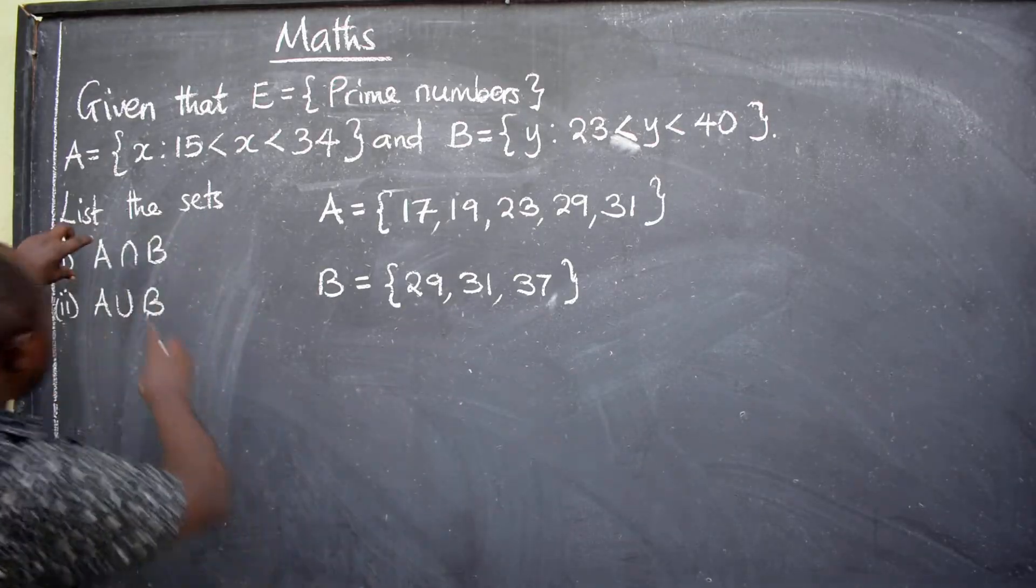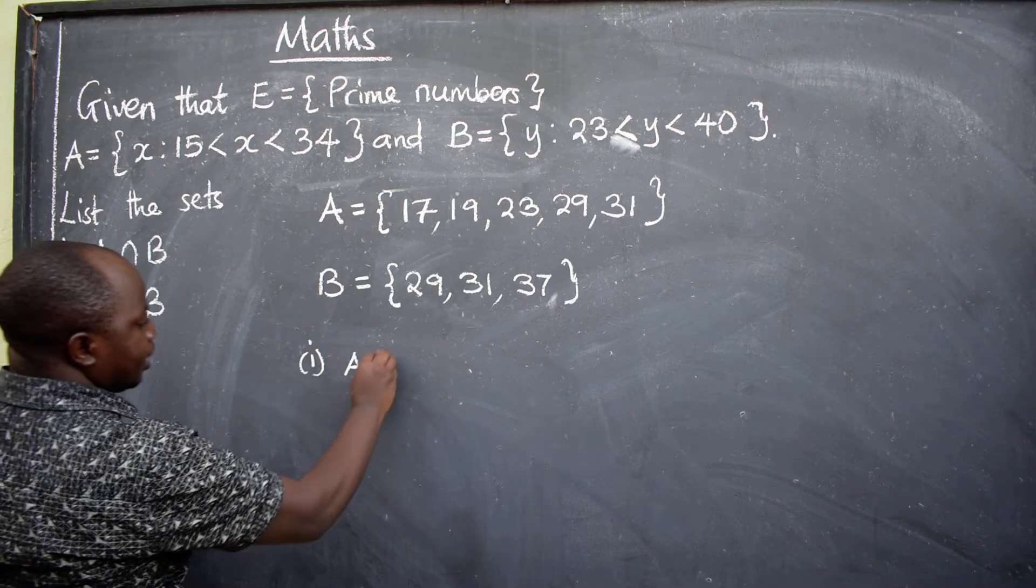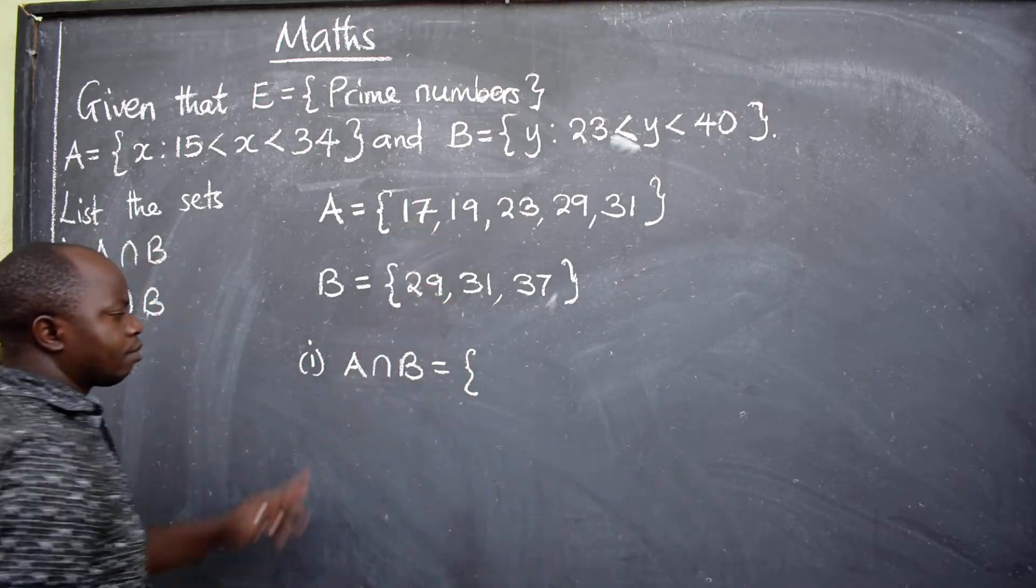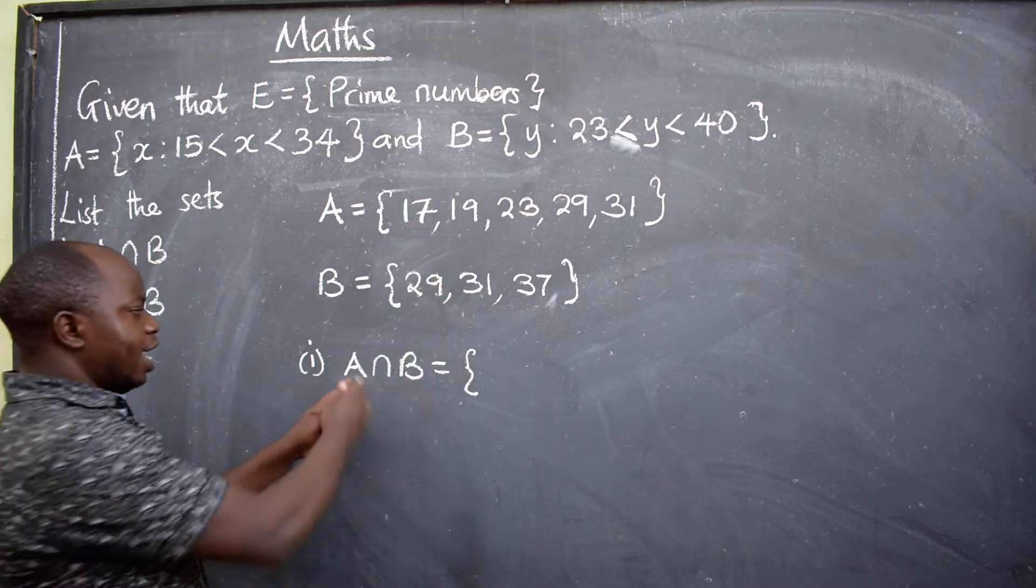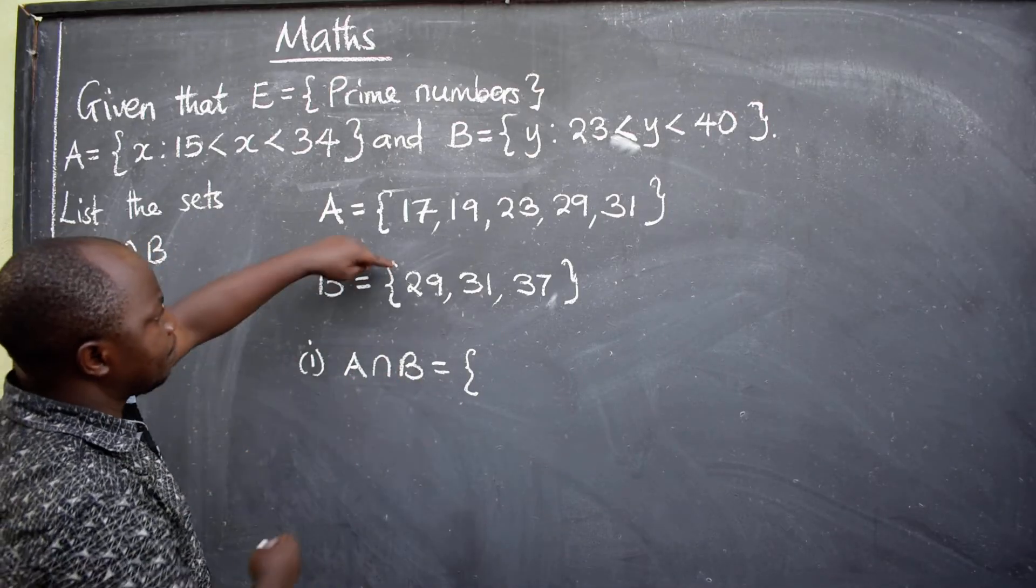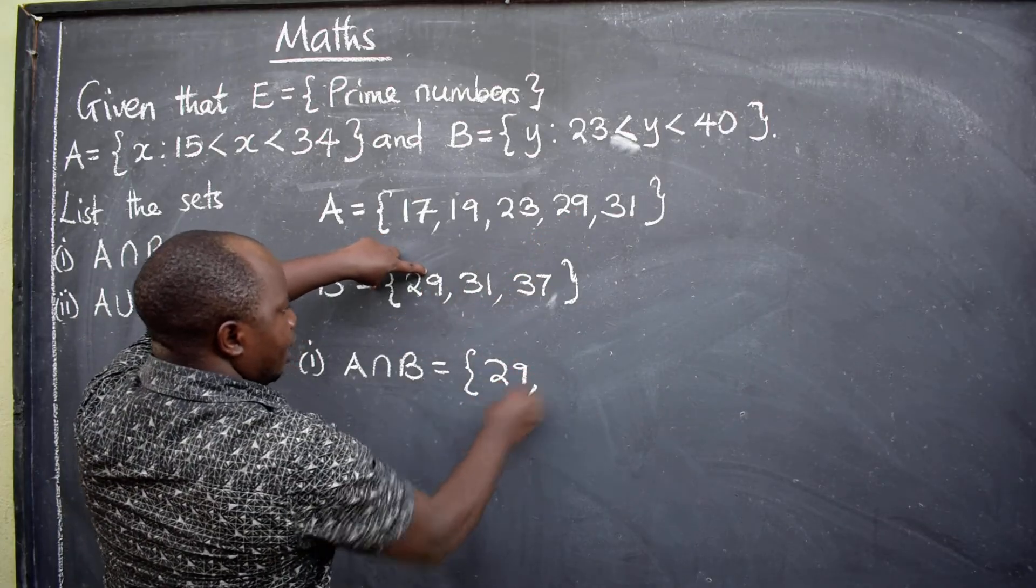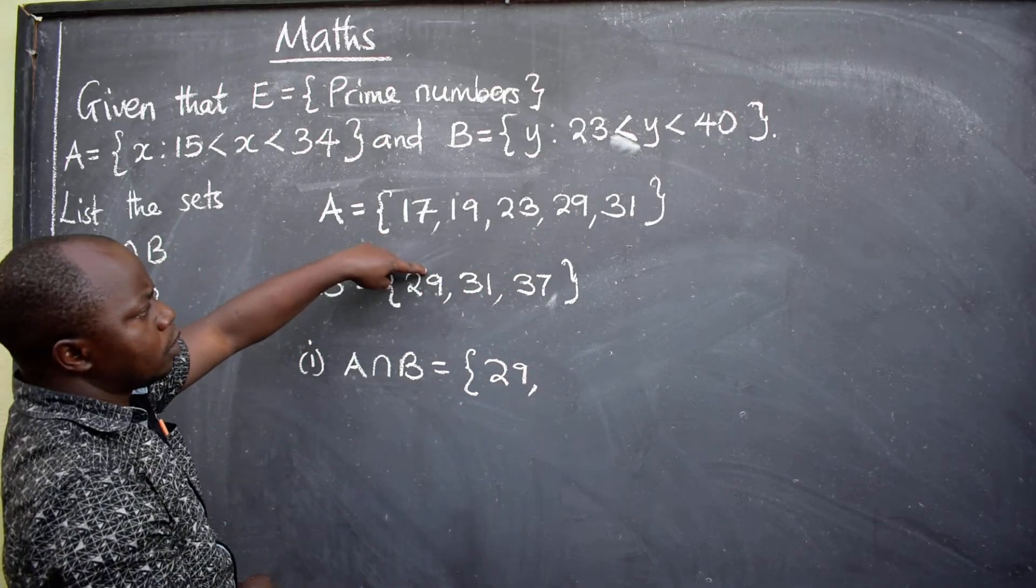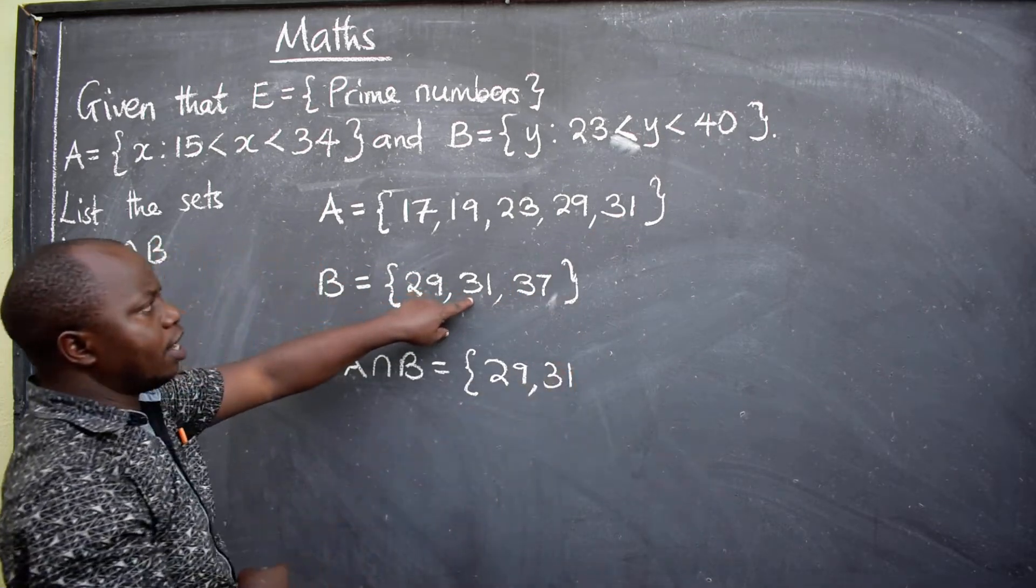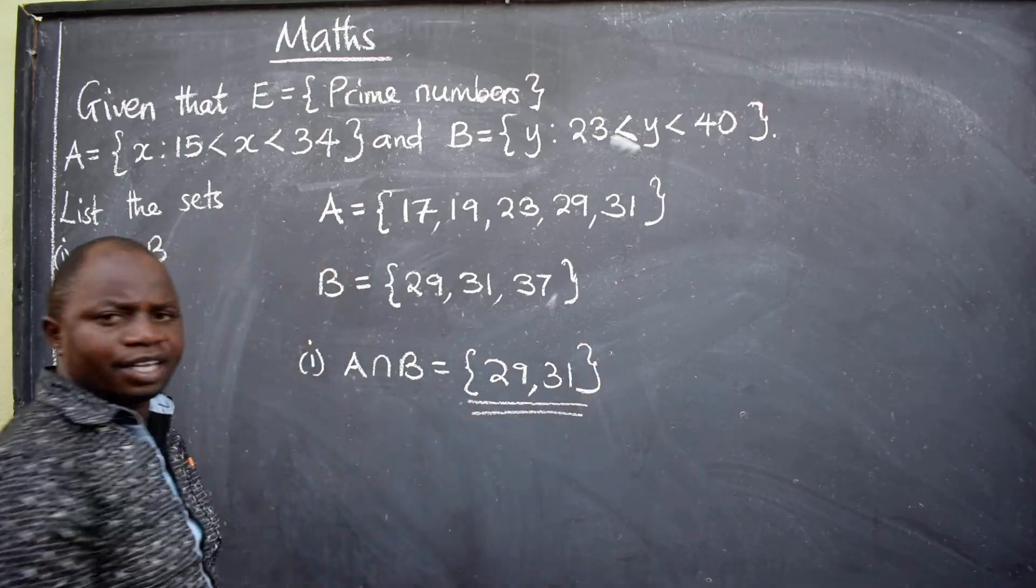A intersecting B. Come to this. A intersecting B, elements that are in both A and B. So, let's start. We have 29 here. 29. So, we have 29. It's common. We have 31. 31. It's common. Any other? That's all. So, this is the correct answer.